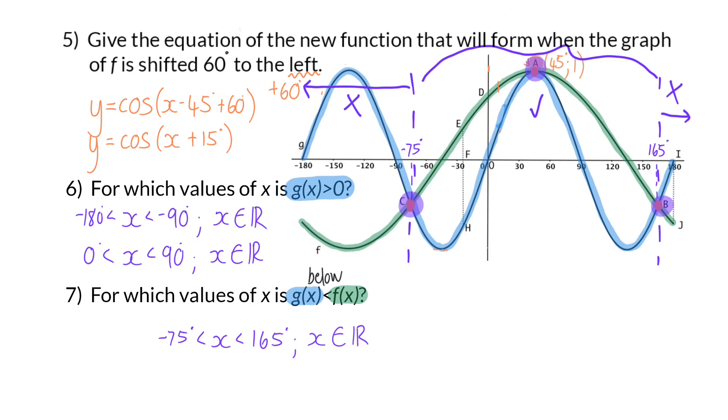Point a is part of the interval that we've just written down, but at point a, these two graphs are equal to each other. The question is, where is g smaller than f, and not equal to as well? Therefore, we need to exclude the value 45 from our answer.